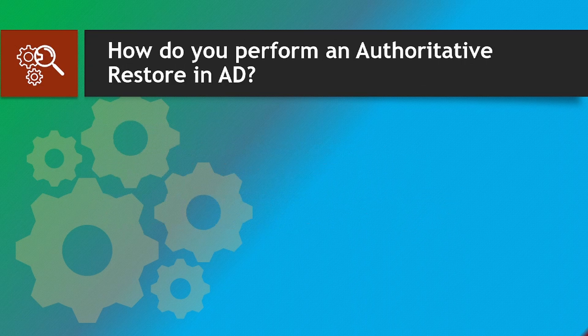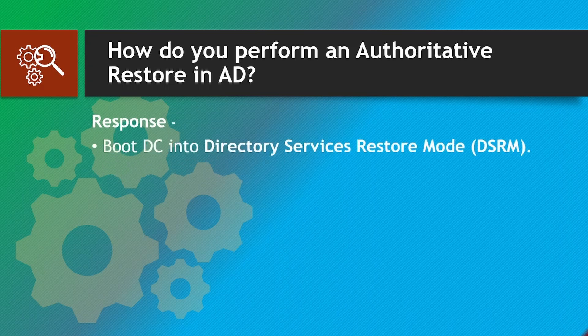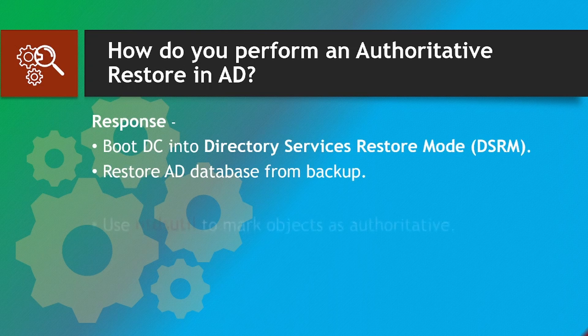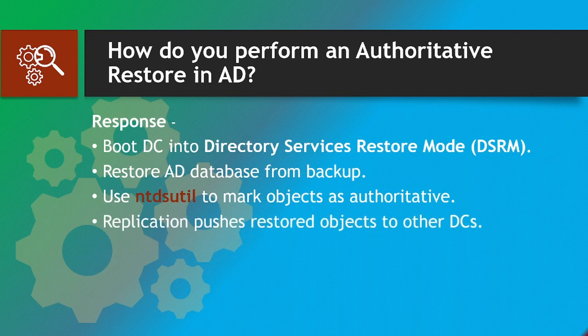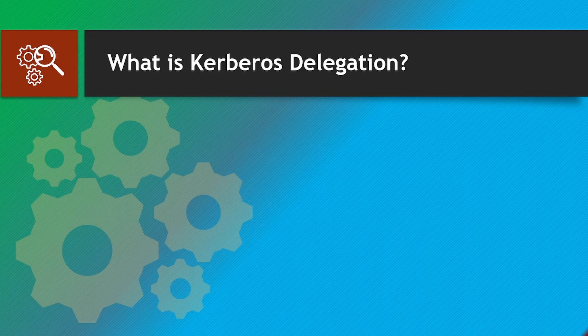How do you perform an authoritative restore in AD? Response: Boot the DC into Directory Services Restore Mode (DSRM), restore the AD database from backup, use ntdsutil to mark objects as authoritative, then replication pushes the restored objects to other DCs.